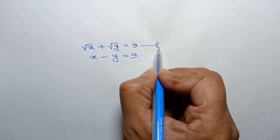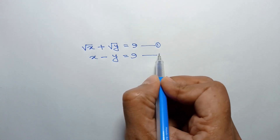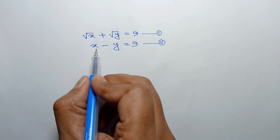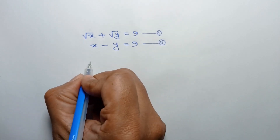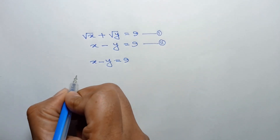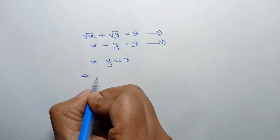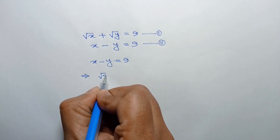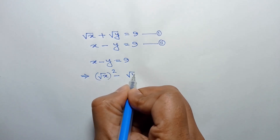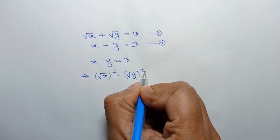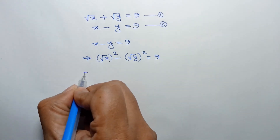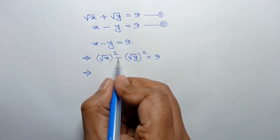Let's call these equation number 1 and equation number 2. From equation 2 we can write x minus y is equal to 9, or x can be written as square root of x whole square, minus y can be written as square root of y whole square, is equal to 9.